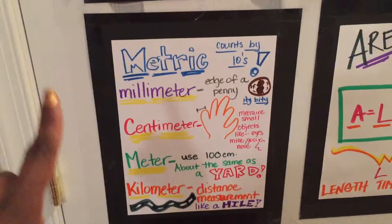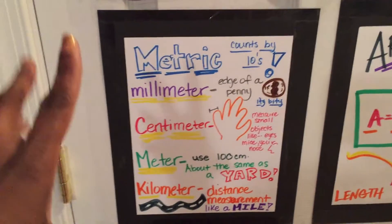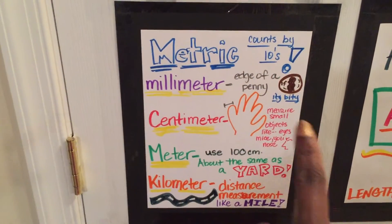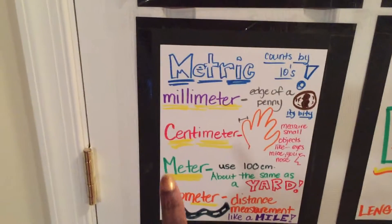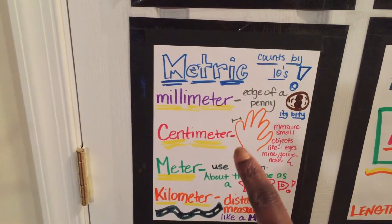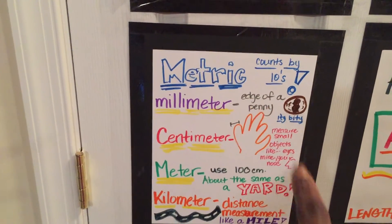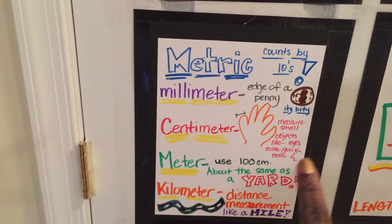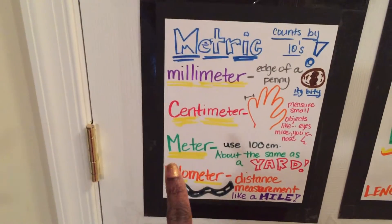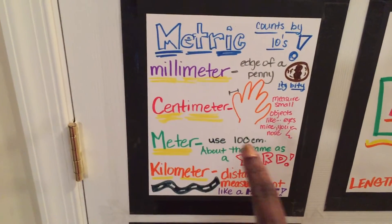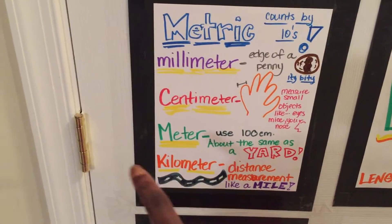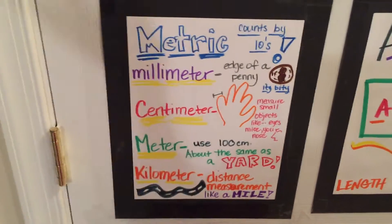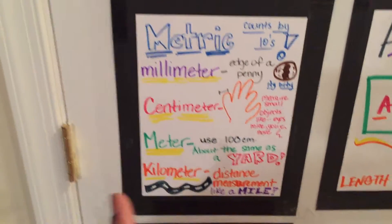Here's another one for the metric system. A millimeter is the size of the edge of a penny. A centimeter measures small objects like eyes, nose, mice, your mouth, whatever. A meter uses a hundred centimeters — about the same as a yard. And a kilometer as a distance measurement is like a mile. Just stuff so they can see.